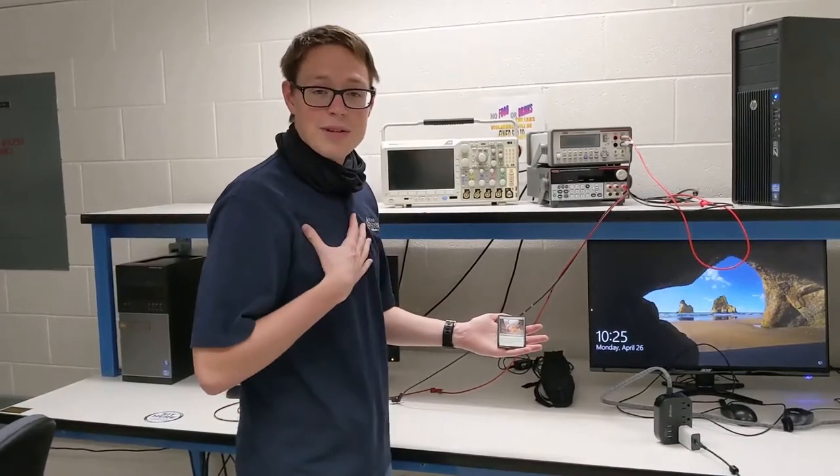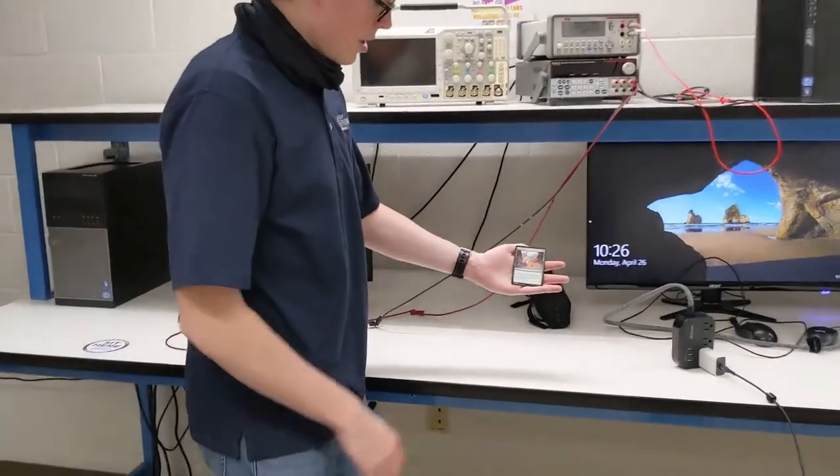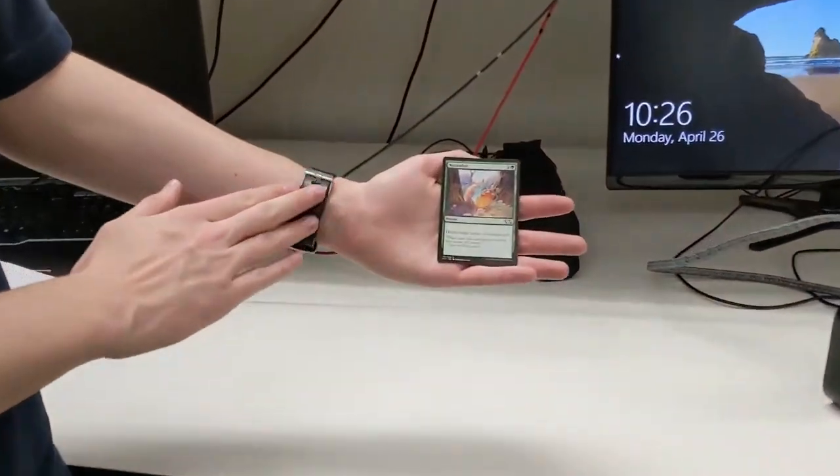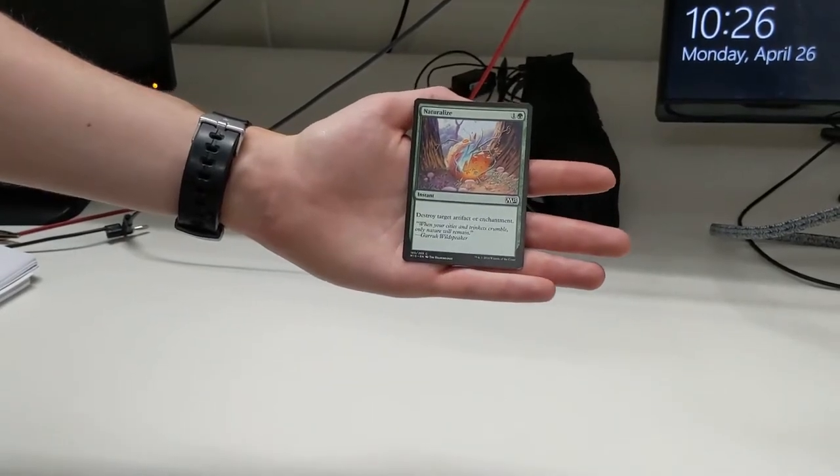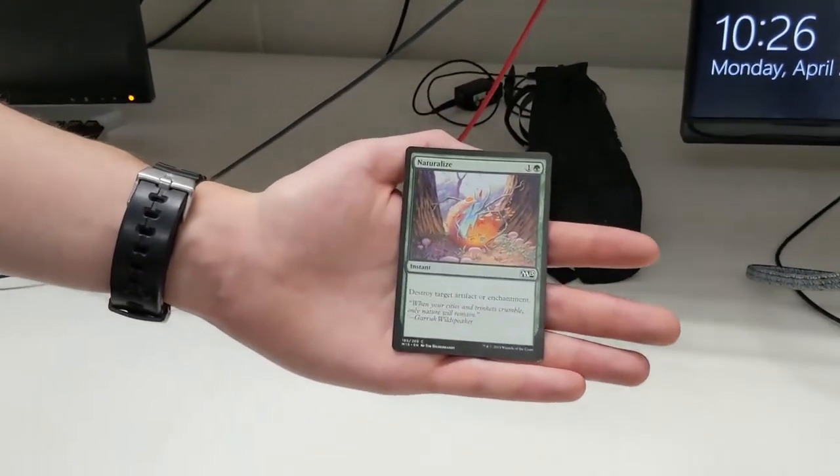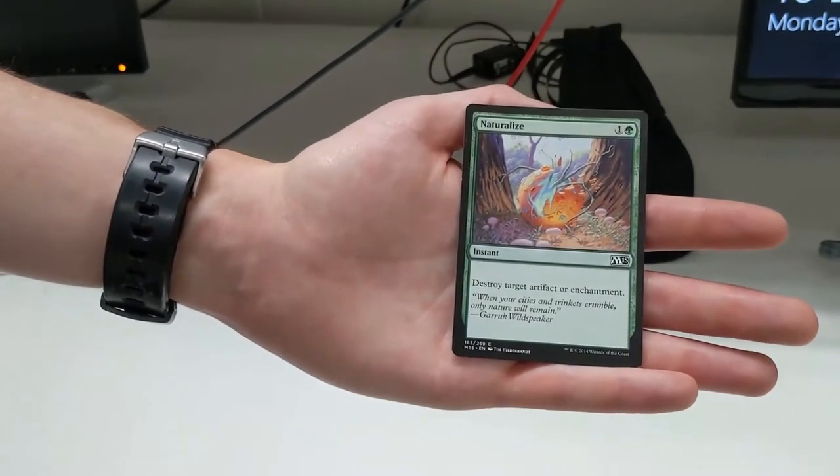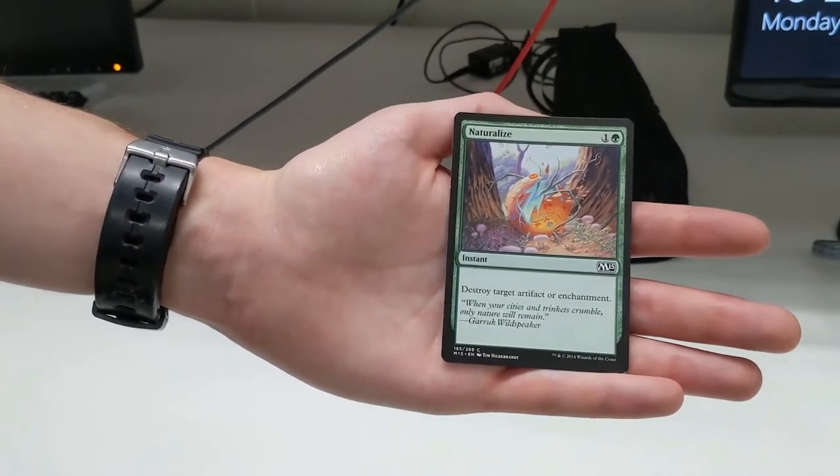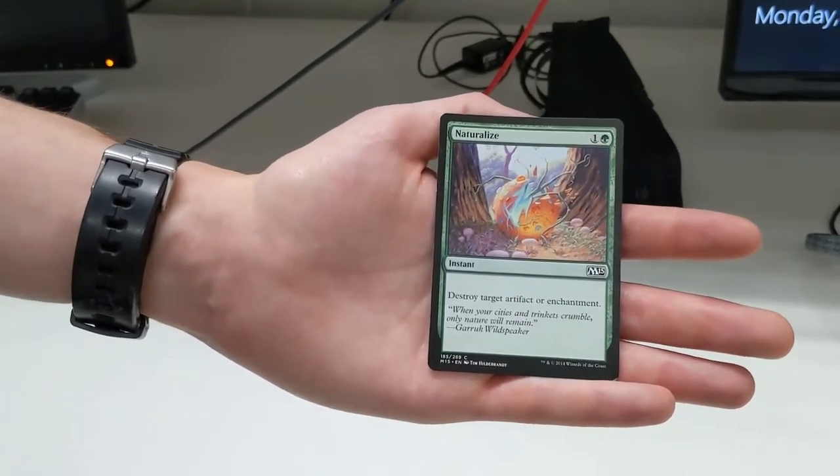Alright, now I will explain the optical character recognition that we'll be using. For our project, we'll be using two different kinds of software. The first one is called OpenCV, which is a relatively common image processing library. The second one is called Tesseract, which uses a neural network to identify the different kinds of text that are on our card.